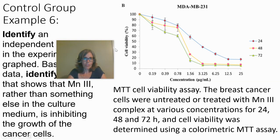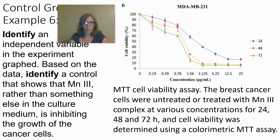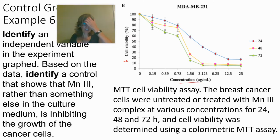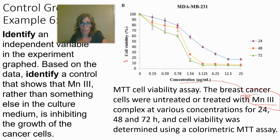The next example is very similar. It also shows cell viability as the dependent variable on the y-axis and concentration on the x-axis. The breast cancer cells were untreated or treated with MN3 at various concentrations for 24, 48, and 72 hours, and cell viability was determined using an MTT assay.